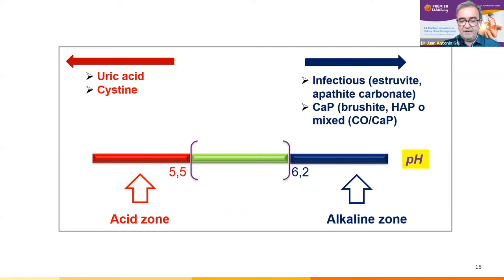Obese patients, due to hyperinsulinemia or insulin resistance, show a decrease in urinary pH secondary to a dysfunction in ammonium excretion and urine acidification at the proximal tubule. In recent years, we can see that lithiasic patients show up with high body mass index, increased abdominal circumference, and high rate of body fat — findings related to increased oxalate, calcium, and uric acid excretion in urine, increasing stone formation risk.